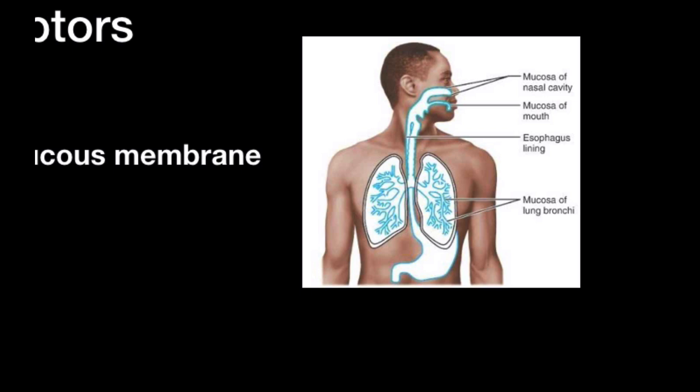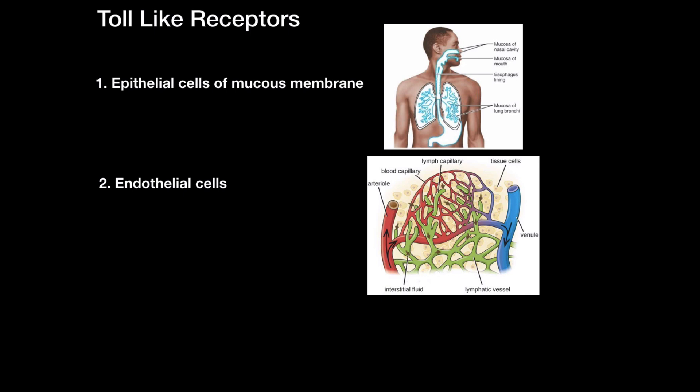This includes the mucosa of the nasal cavity, the mouth, the esophagus, lungs and many more. You'll also find them lining endothelial cells of the blood vessels. This is very crucial because it helps the body detect microorganisms very fast.